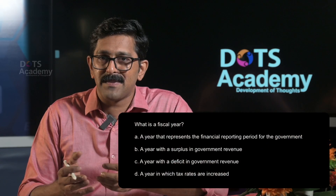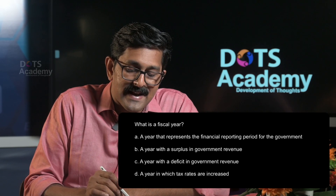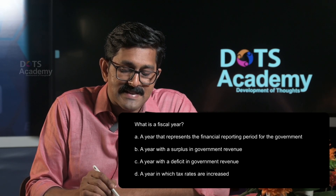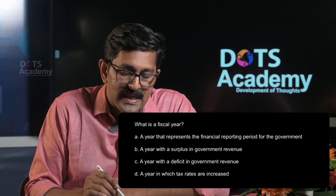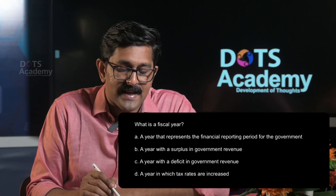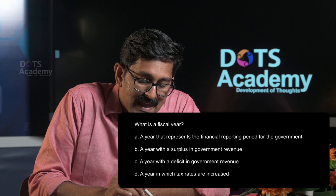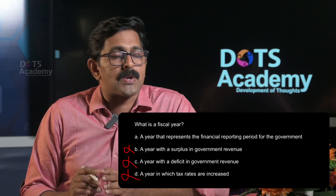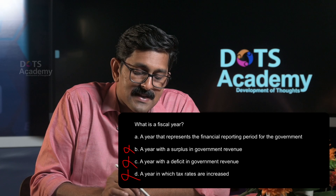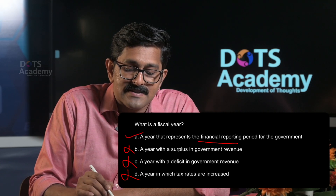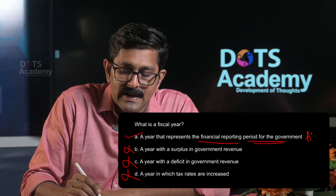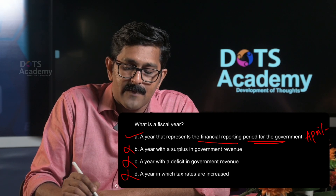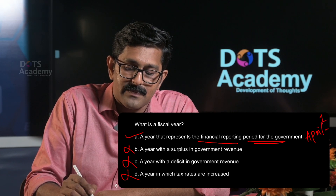What is a fiscal year? Option A: A year that represents the financial reporting period of the government. Option B: A year with a surplus government revenue. Option C: A year with a deficit in government revenue. Option D: A year in which tax rates are increased. In India, the fiscal year runs from April 1st to March 31st. Option A is the correct answer.